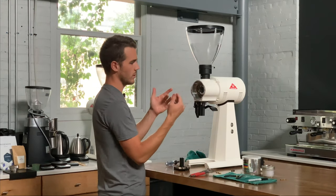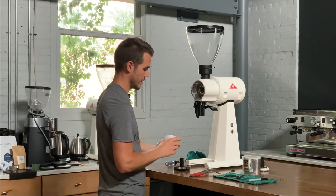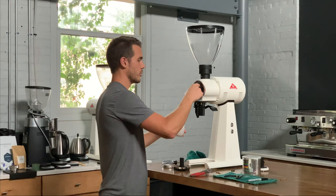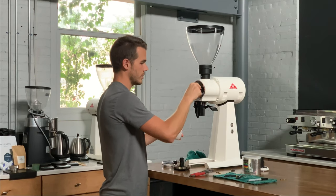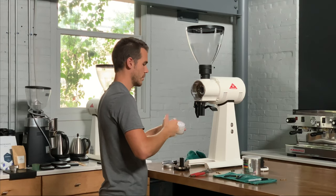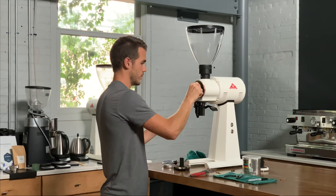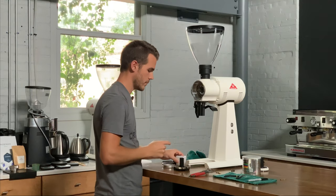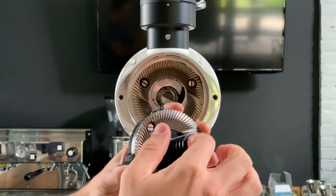So once you get this all cleaned out, take our grease, just take a decent amount and we can wipe it on the shaft the whole way around. We can also put some on the inside of this burr carrier.